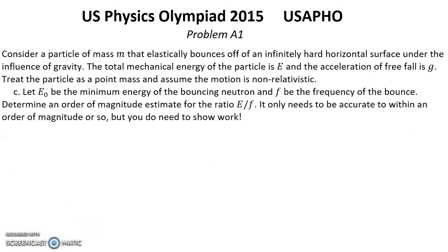Part C. Let E_0 be the minimum energy of the balancing neutron and F be the frequency of the balance. Determine an order of magnitude estimate for the ratio E over F. It only needs to be accurate to within an order of magnitude or so. But you do need to show work. Solution.